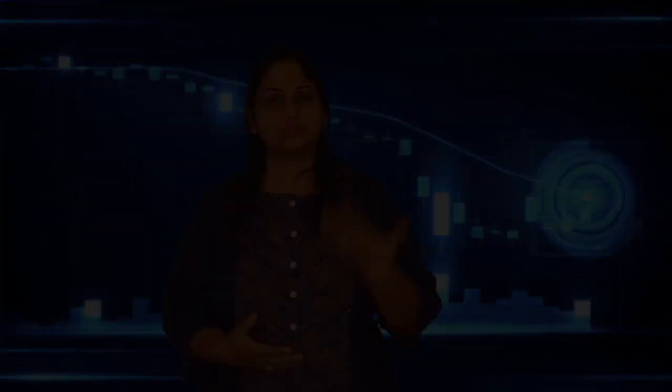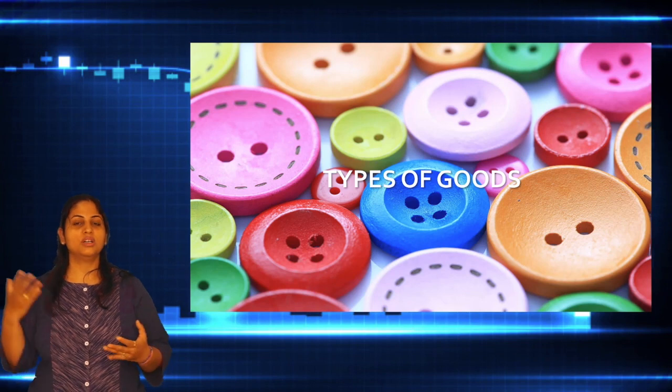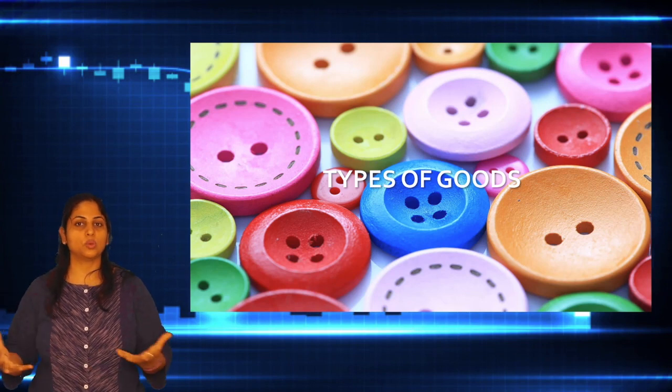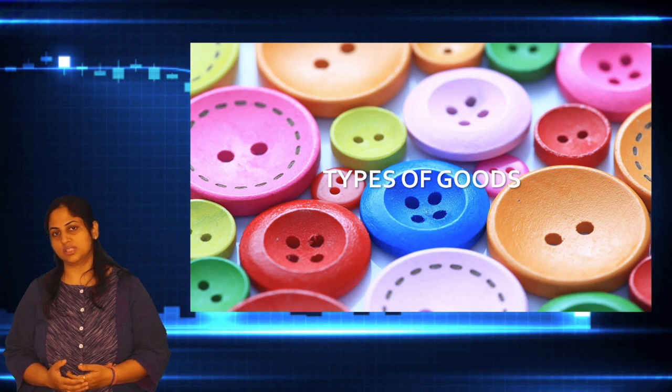There are many components of national income which we will discuss in this series. The first thing in this series is the types of goods. Before understanding GDP and GNP, we need to understand which products we are talking about — what kind of things are included in the total of GDP. That's why we need to understand goods and services.